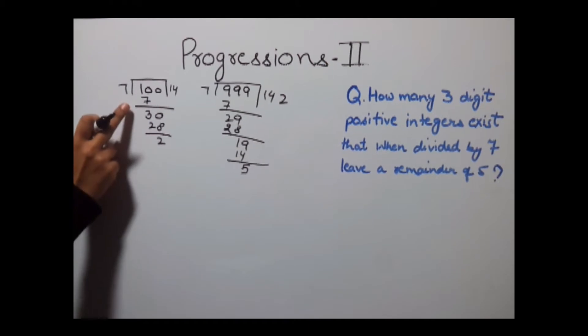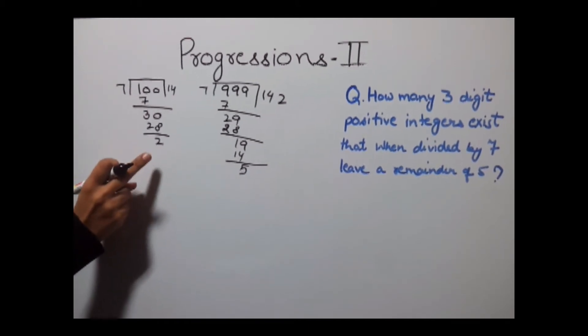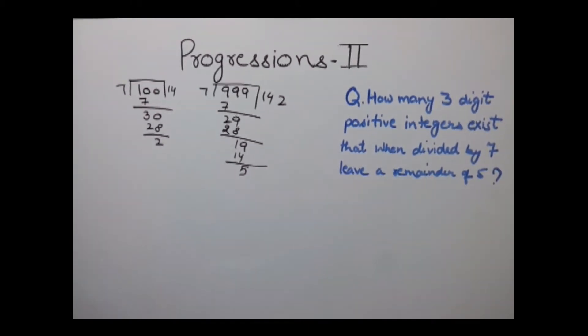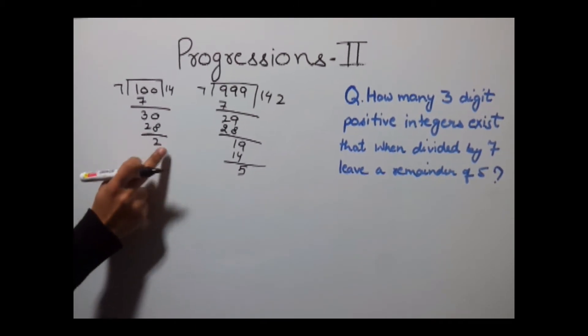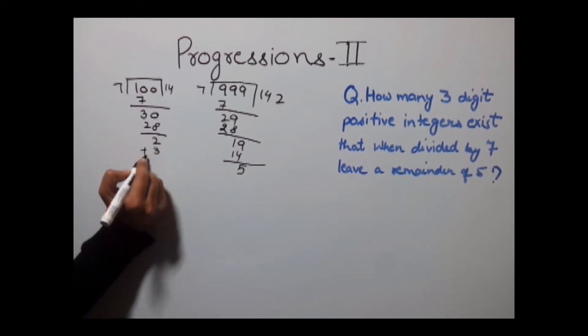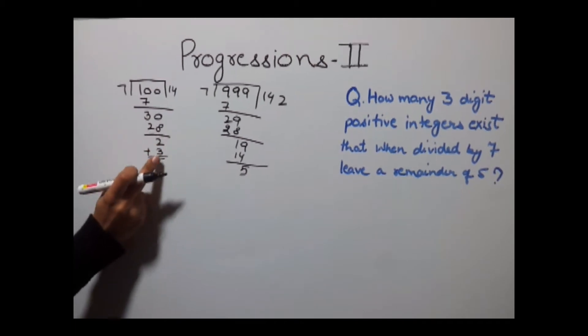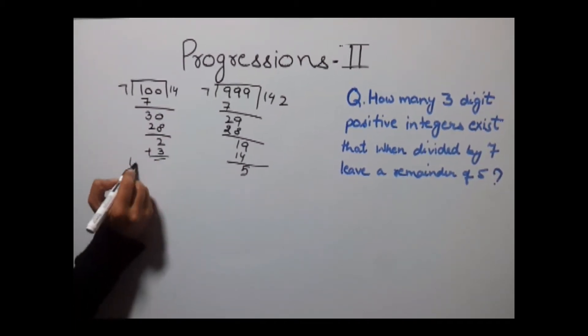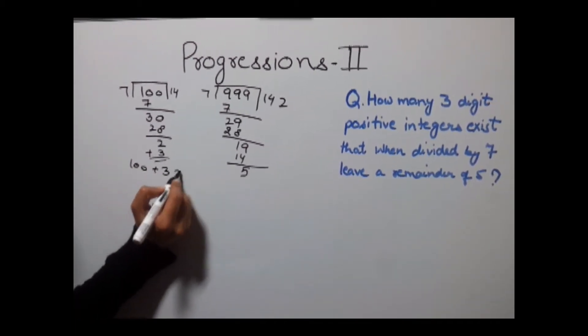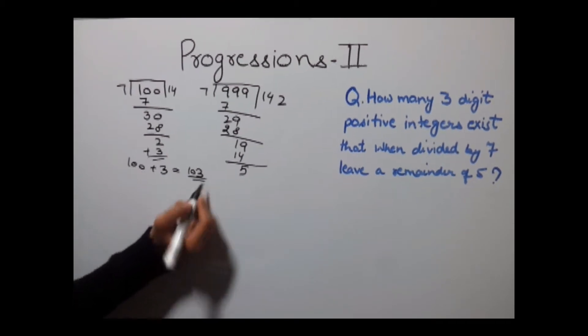But in this case we're getting a remainder of 2, but we need a remainder of 5. So to get a remainder of 5, we'll add +3 to this number, that is 100 + 3, which gives us 103 as the answer.